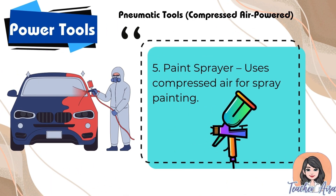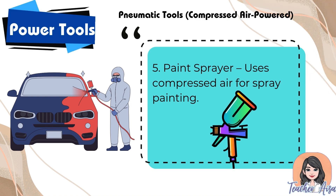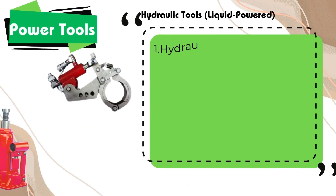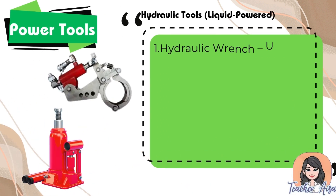Five: paint sprayer — uses compressed air for spray painting. Under hydraulic tools: one, hydraulic wrench — uses hydraulic torque for heavy-duty fastening.